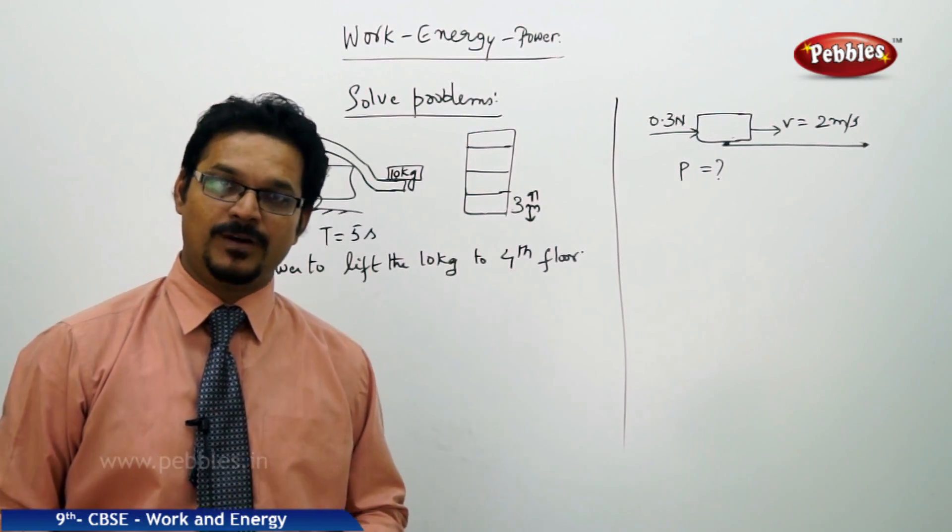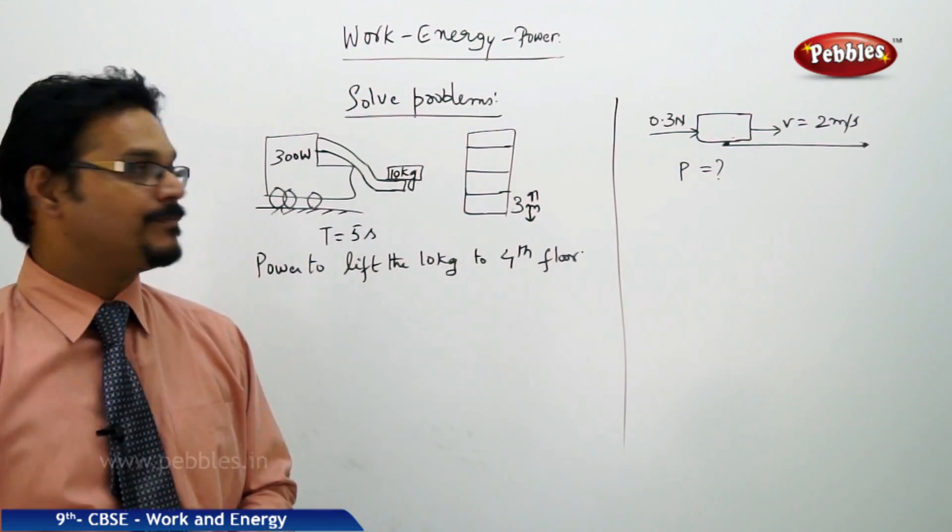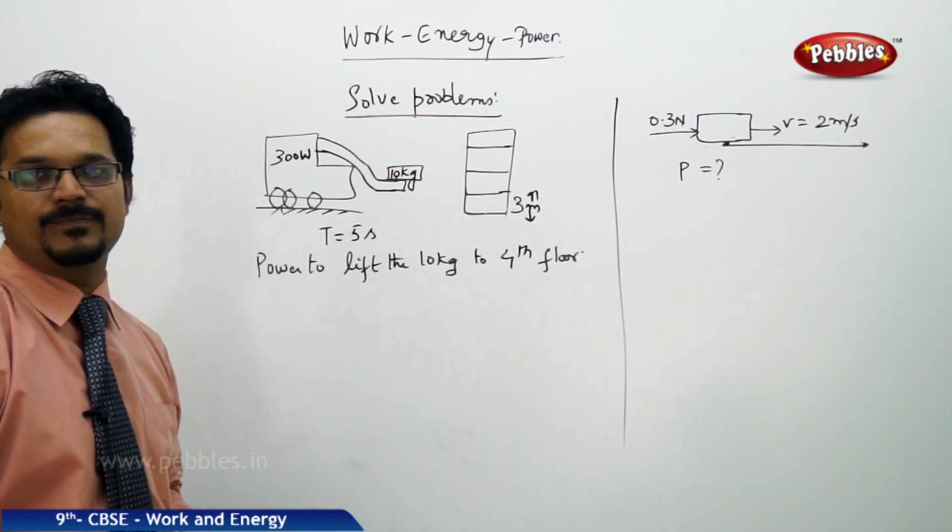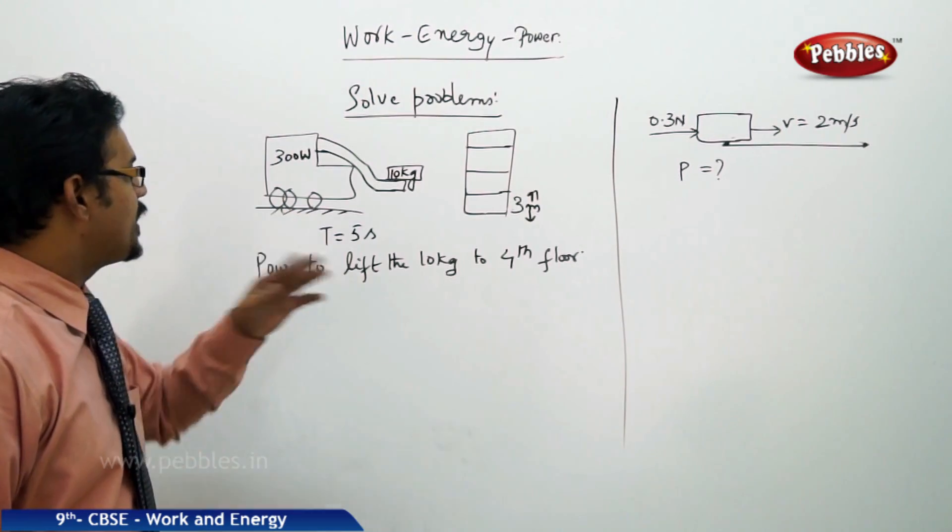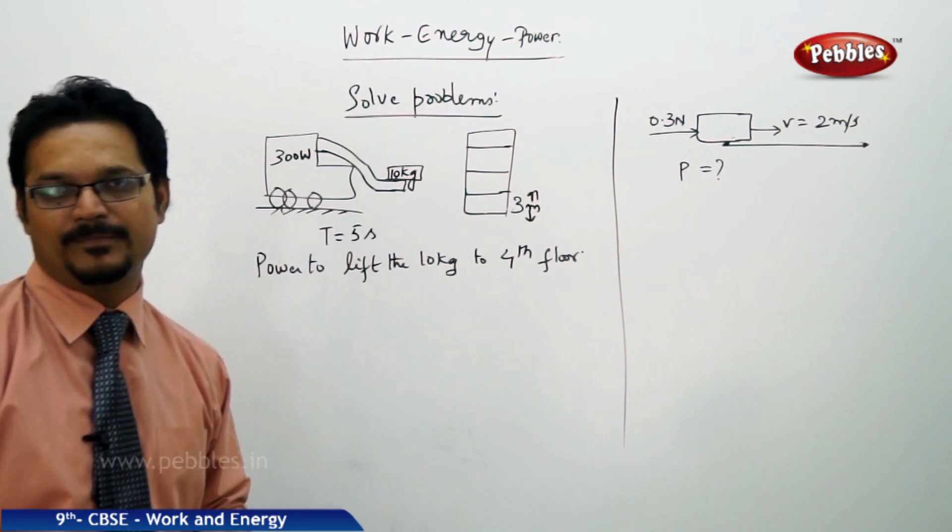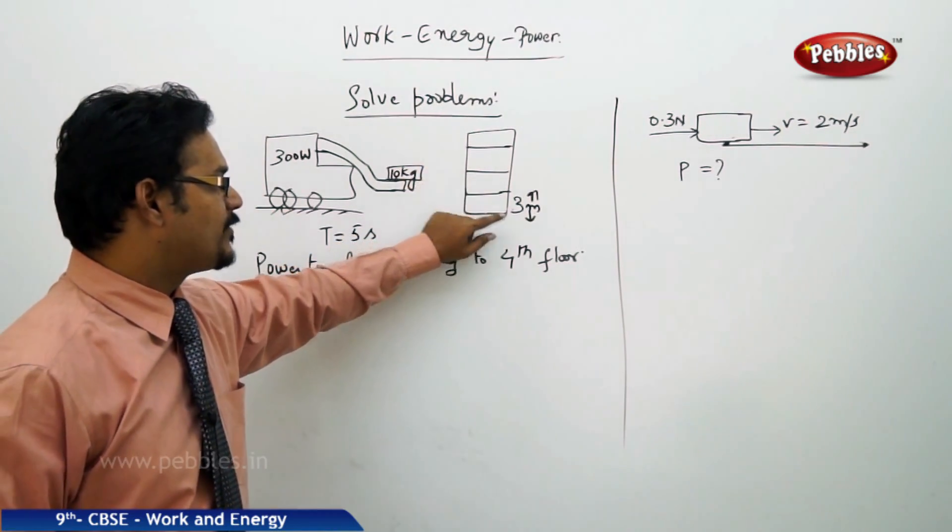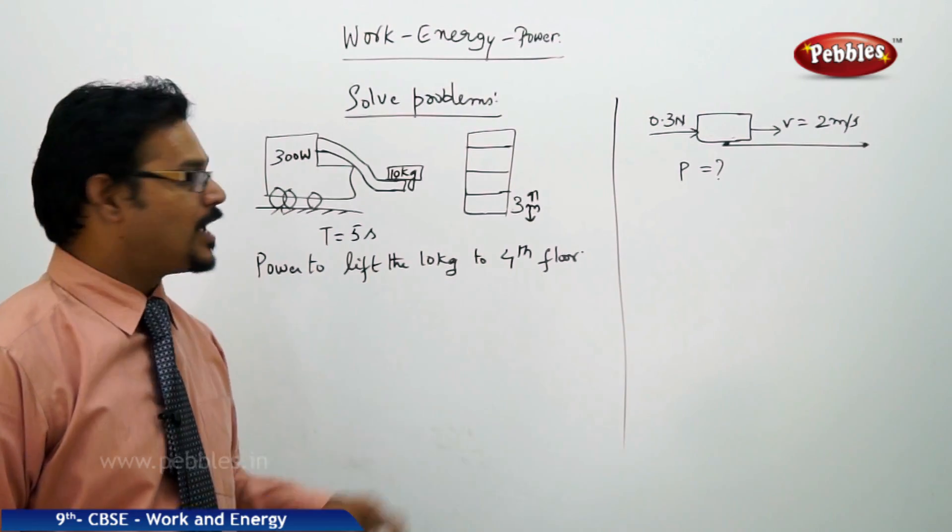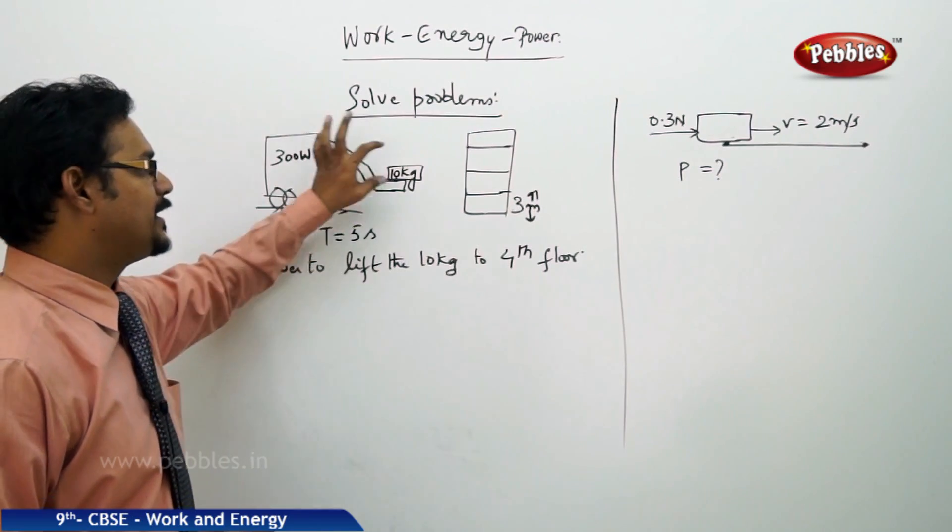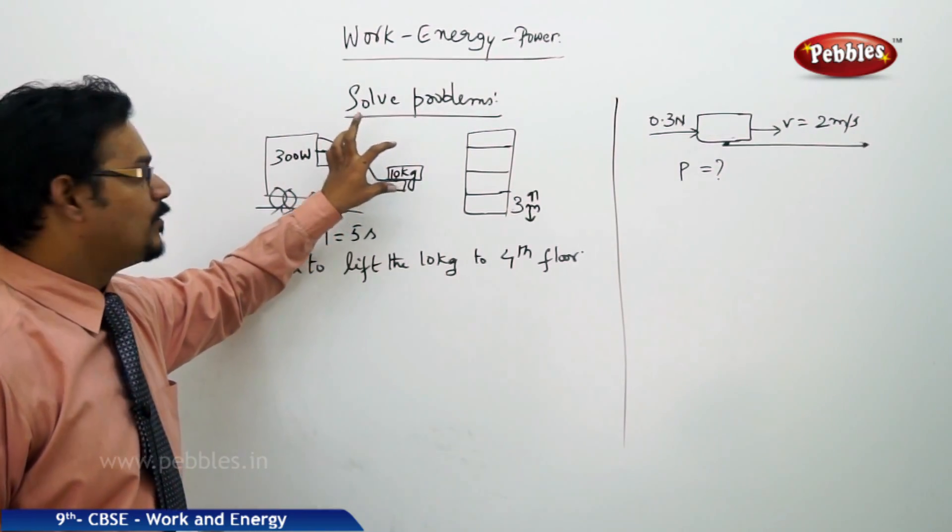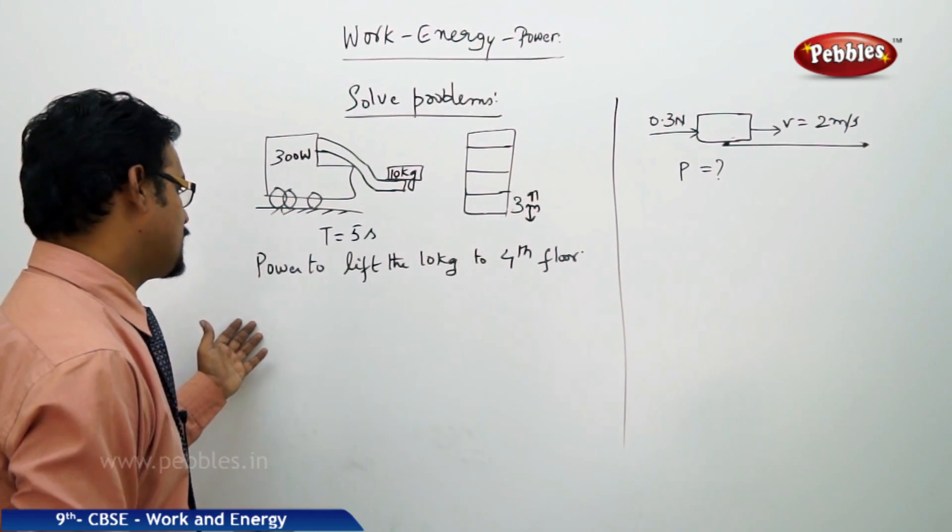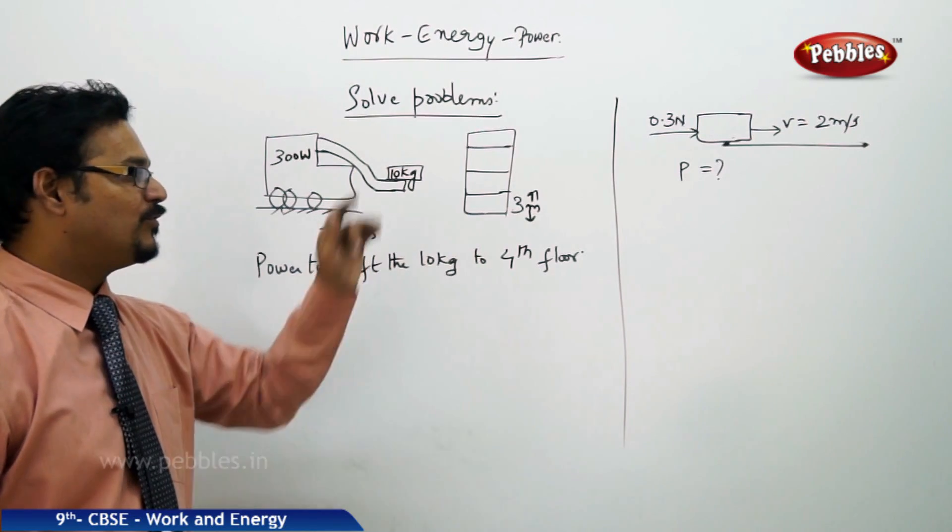Now let us apply our knowledge of power in these examples. There is a crane whose power is 300 watts and this crane is lifting a 10 kg block and keeping it on the 4th floor of a multi-story building. Each floor has height 3 meters and this 10 kg has to be kept on the 4th floor. It is keeping the 10 kg weight to the 4th floor in time 5 seconds.